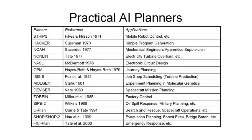Even the earliest AI planners were used in realistic and practical applications. The Strips planner from the early 1970s was used to control the Shakey robot. And as you can see from this table, there's a range of planners over the decades which have been applied to a wide range of application areas. We're going to cover some of those in a later module of this course.